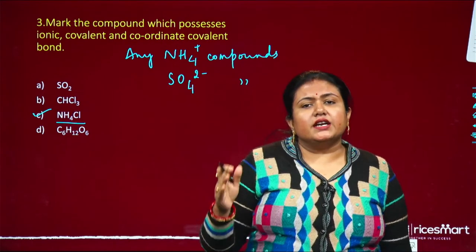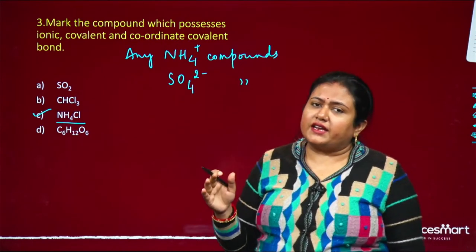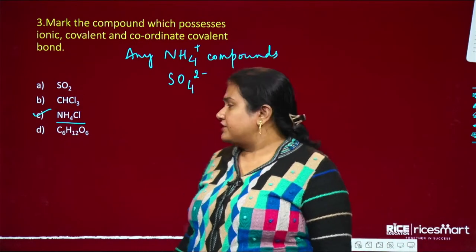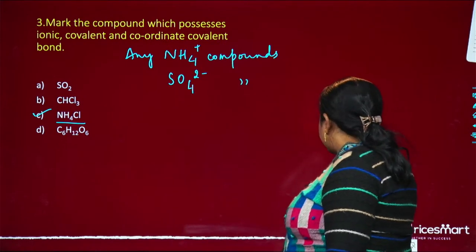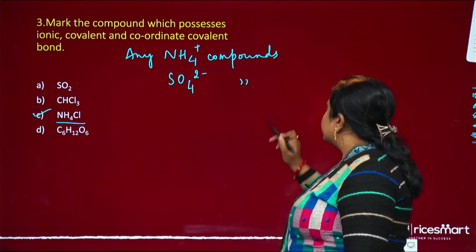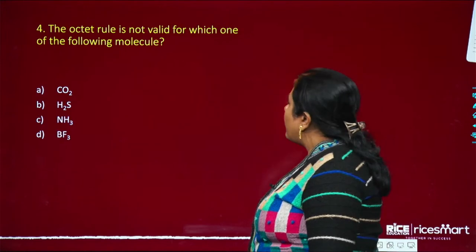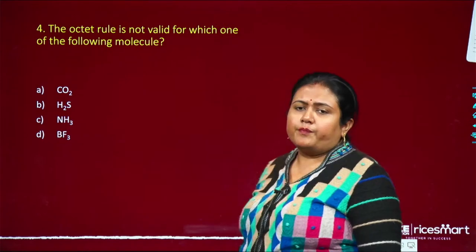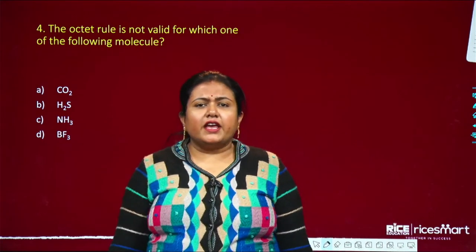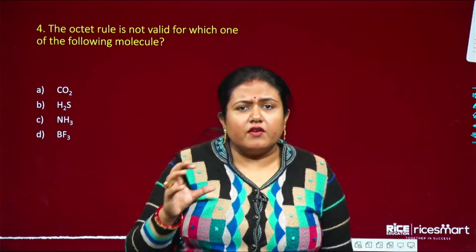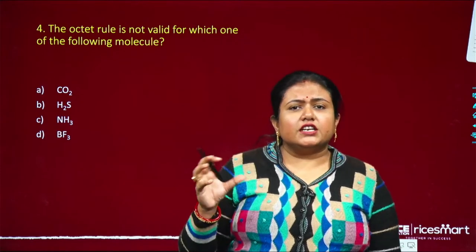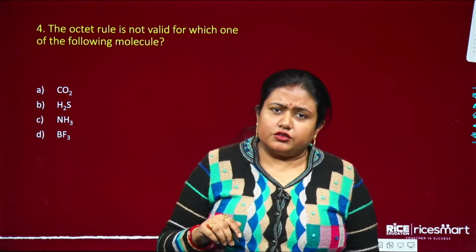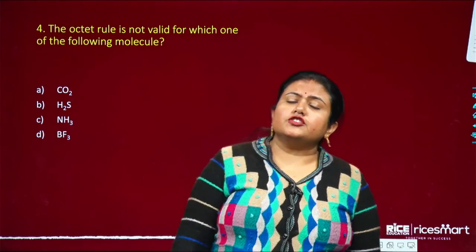Next, question number four: the octet rule is not valid for which of the following molecules? Generally, bonding fulfills the octet criteria — the last orbit should have 8 electrons. These are considered stable compounds when they fulfill the octet criteria.